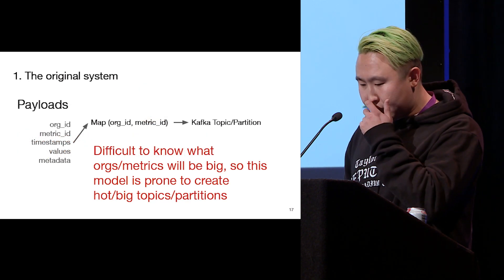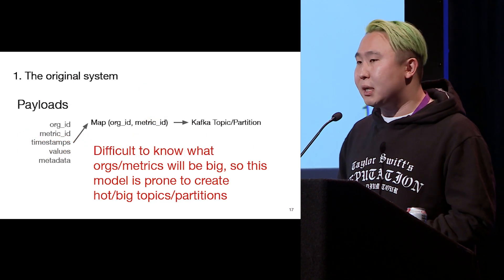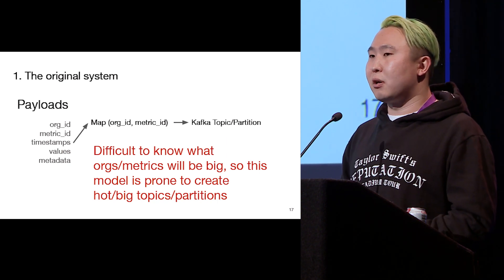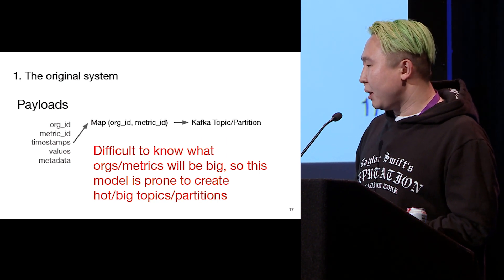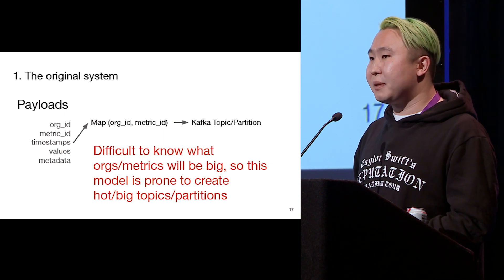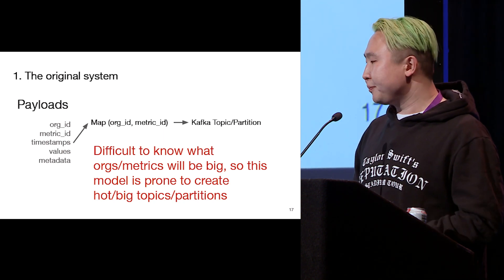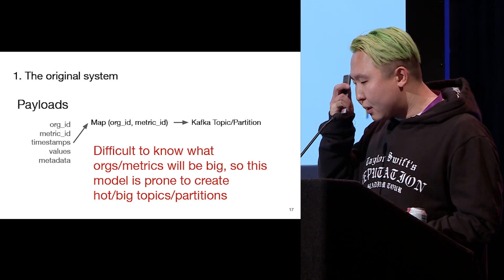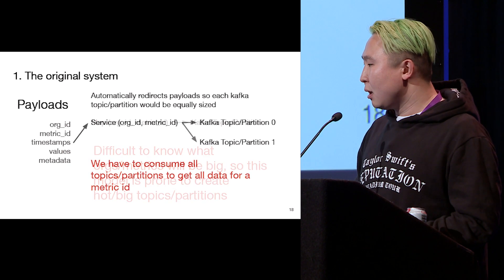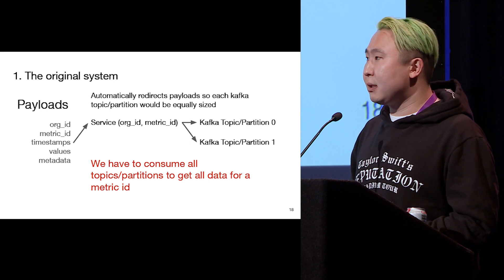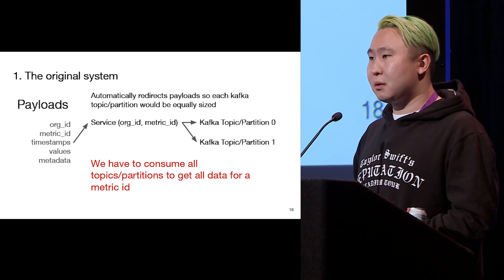The other problem is that it's difficult to predict which org and metric is going to be big. So this system creates some hot, big topics and partitions which create problems downstream. So we decided to create a new service that automatically balances orgs and metrics across different topics and partitions, so each Kafka topic partition is equally sized.